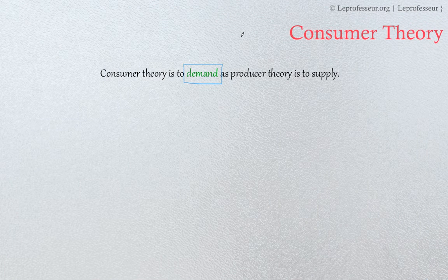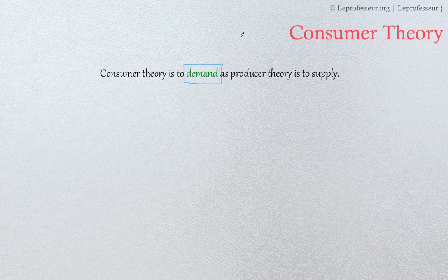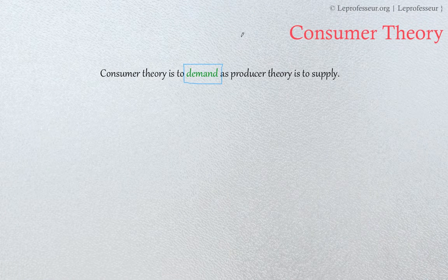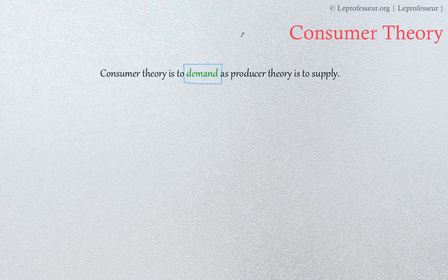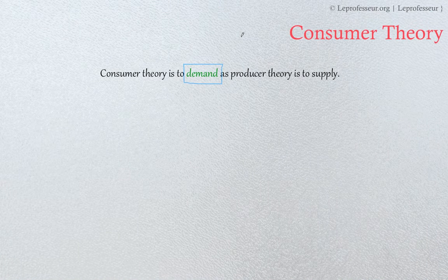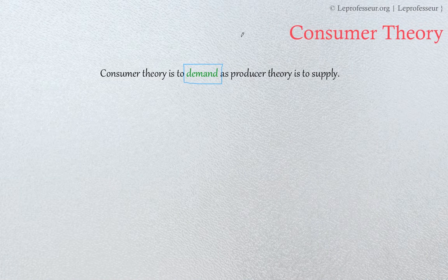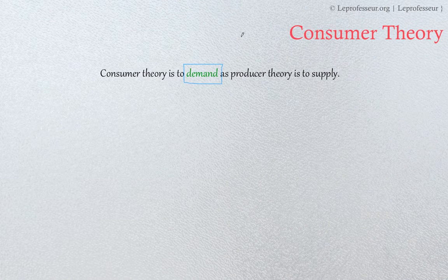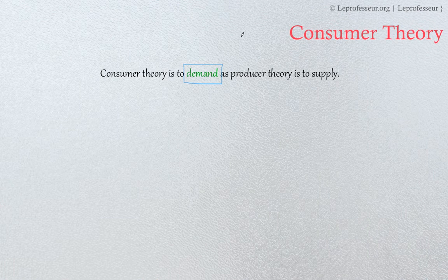In economics we have two key variables: demand and supply. The whole economic system revolves around demand and supply — whether it is demand for labor or demand for goods, and somebody is providing labor and somebody is providing goods and services. Economic systems are always in dynamic equilibrium of demand and supply. It's a very tricky thing to measure consumer satisfaction, or in other form, the demand.